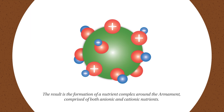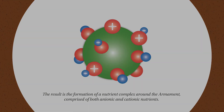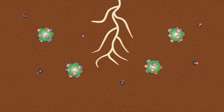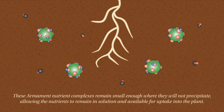The result of these bonds is the formation of a nutrient cluster around the armament, comprised of both anionic and cationic nutrients. These armament nutrient clusters remain small enough where they will not precipitate, allowing the nutrients to remain in solution and available for uptake into the plant.